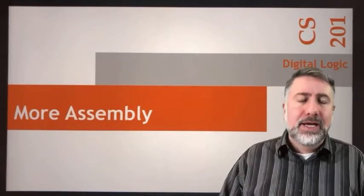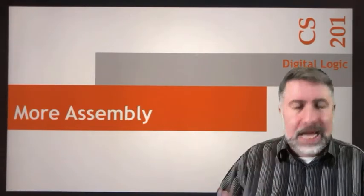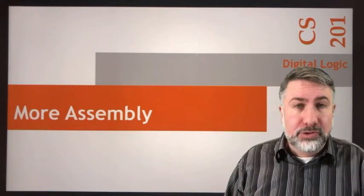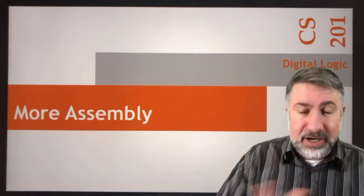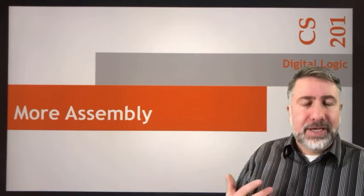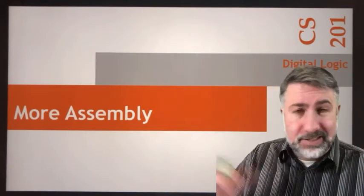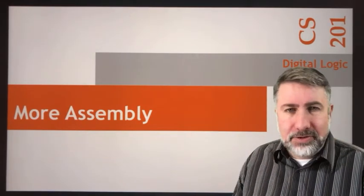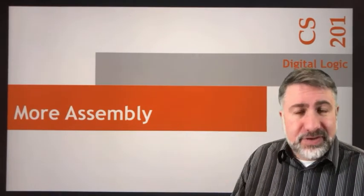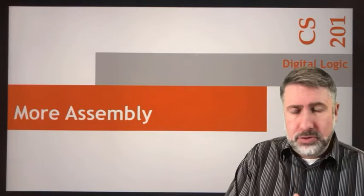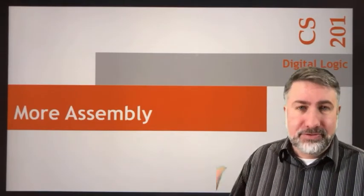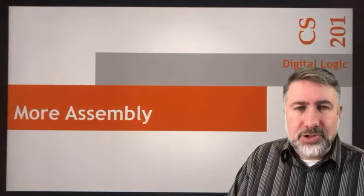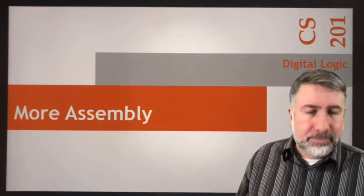The first step is to walk through an example program, and the example program we usually use is Hello World. This is a Hello World program that allows you to display text to the screen. In C++ or any of the other high-level languages this is fairly straightforward — there's a command that prints and you're done. With assembly language there are a lot of really low-level details needed to display something on a console window.